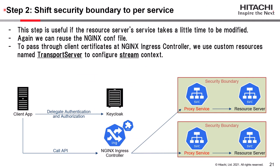Step 2 is to shift the security boundary to per-service. This step is useful if the resource server service needs a little time to be modified to adapt to the Zero Trust network. Again in this step, we can reuse the NGINX configuration. To pass through client certificates at the NGINX Ingress Controller, we use custom resources named Transport Server to configure the stream context. The NGINX Ingress Controller only passes through API calls, and proxy services play the role of API gateway and proxy API calls to the resource server services. The grain size of the security boundary becomes per service.